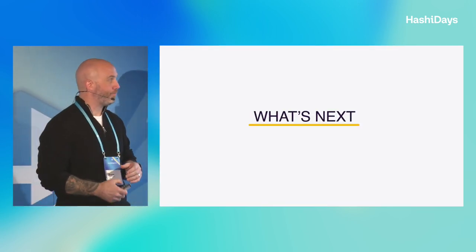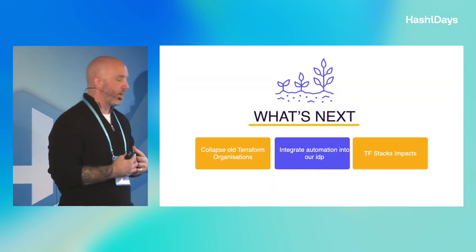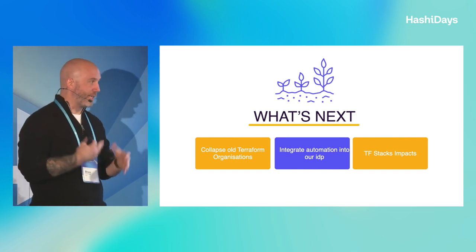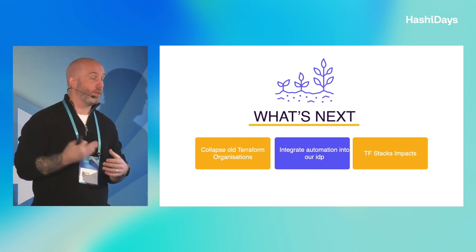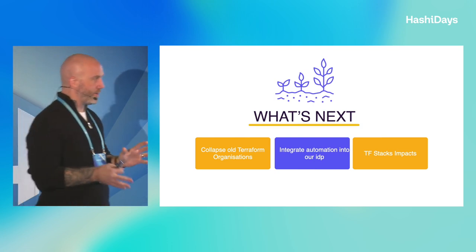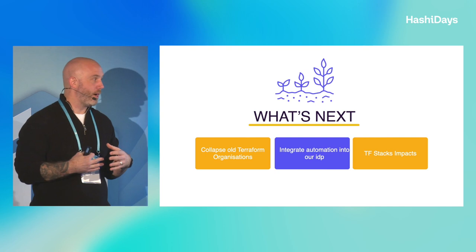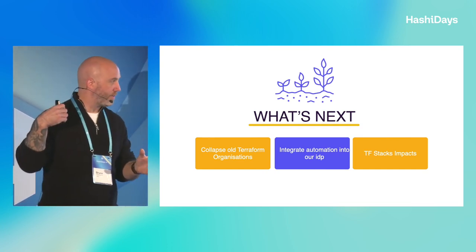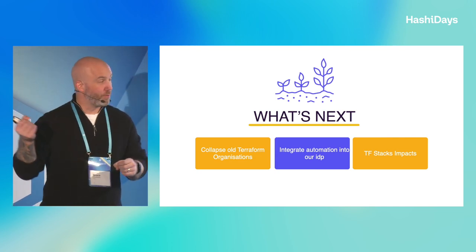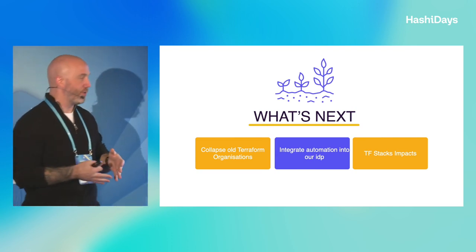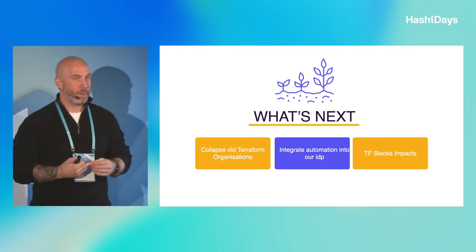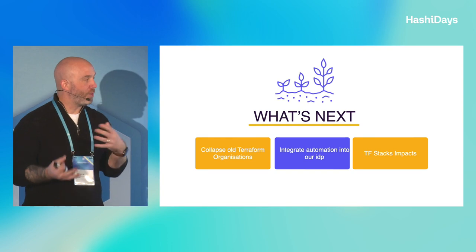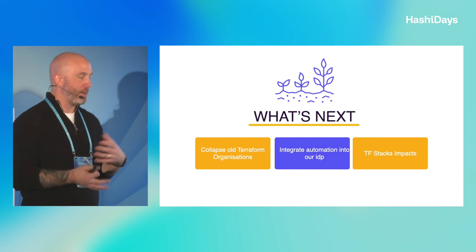So, what's next? We're far from finished. We've been on this journey for about eight to nine months now, onboarding new teams every day, and we've still got a fair chunk of existing orgs to fold in. We want to integrate the automation we've built into our internal developer platform and move to stage three of the maturity model — full self-service. We're also looking at new features coming down the pipeline, like Terraform Stacks, and what impact that has on our current workspace structure and how we can leverage it in the future.